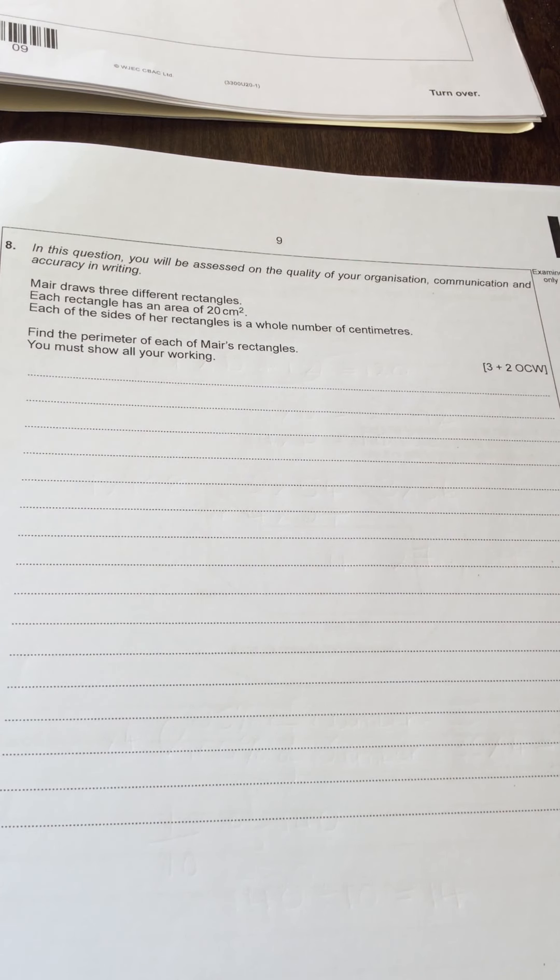In this question 8, you will be assessed on the quality of your organisation, communication and accuracy in writing. Maya draws three different rectangles. Each rectangle has an area of 20. Each of the sides of a rectangle is a whole number in centimeters and they want you to find the perimeter of each of Maya's rectangles.